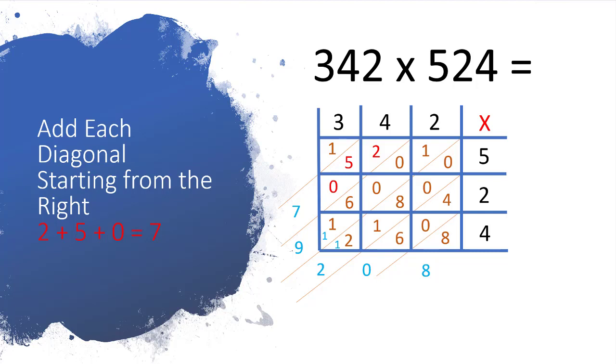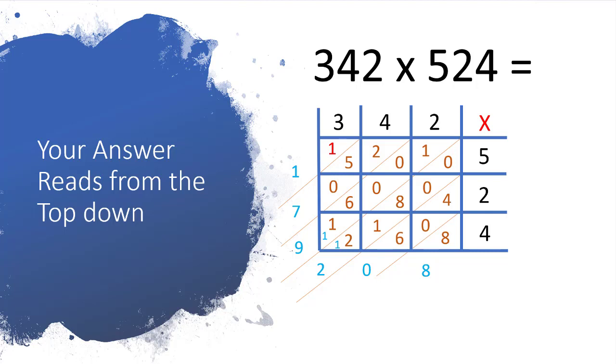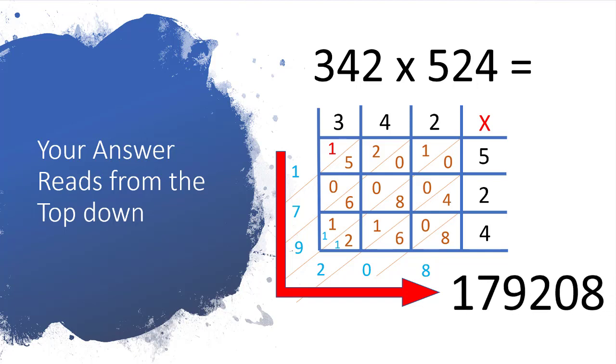And then in that final one we've only got one figure, so that's number one. So now your actual answer is read from the top down on those blue ones we've put there. So there's the way you do it. Start from the 1: 1, 7, 9, 2, 0, 8. So let's put those in: 1, 7, 9, 2, 0, 8, and that is your answer.